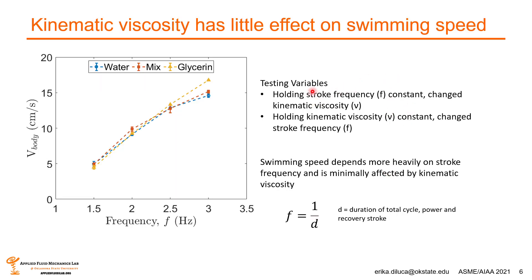Our findings show that when holding stroke frequency constant and changing kinematic viscosity, body swimming speed is not majorly affected across different kinematic viscosities. However, when holding kinematic viscosity constant and increasing stroke frequency, swimming speed increases across the board for all three kinematic viscosities tested. This determines that swimming speed depends more heavily on stroke frequency and is minimally affected by kinematic viscosity.